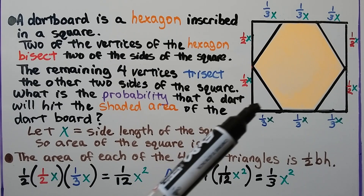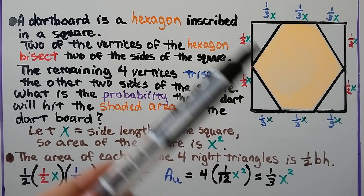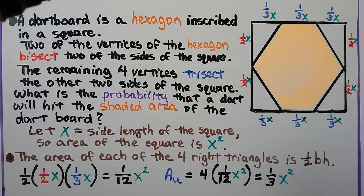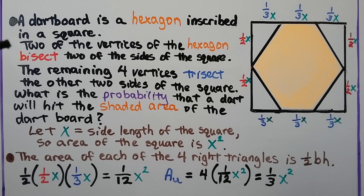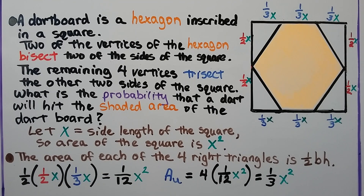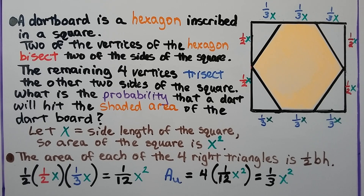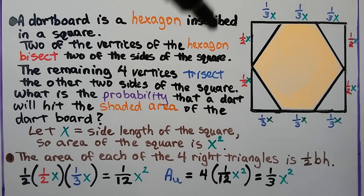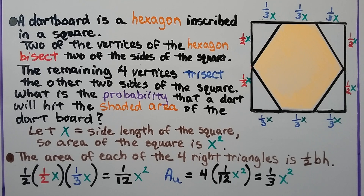Now let's look at this diagram. We have an orange hexagon inside a square — a dartboard that is a hexagon inscribed in a square. Two vertices of the hexagon bisect two sides of the square, and the remaining four vertices trisect the other two sides. Trisecting means splitting into three, while bisecting splits into two. What's the probability that a dart will hit the shaded orange area of the dartboard?